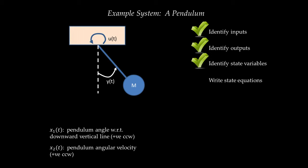Step four is to write down the state equations — an equation for X1 dot and an equation for X2 dot. The equation for X1 dot is straightforward: the rate of change of pendulum angle with respect to time is just angular velocity, so X1 dot equals X2. The second state equation for X2 dot, which is angular acceleration, requires calculating the summation of moments acting on the pendulum using the rotational law of motion: the summation of moments equals angular acceleration multiplied by the moment of inertia.